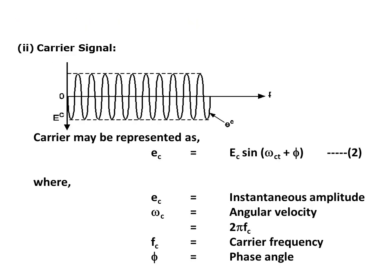The carrier signal may be represented as E_C equals E_C sine of (ω_C t + φ), where E_C is the instantaneous amplitude, ω_C is the angular velocity equal to 2πF_C, F_C is the carrier frequency, and φ is the phase angle.